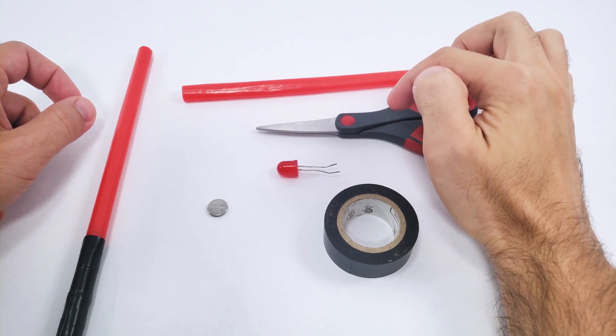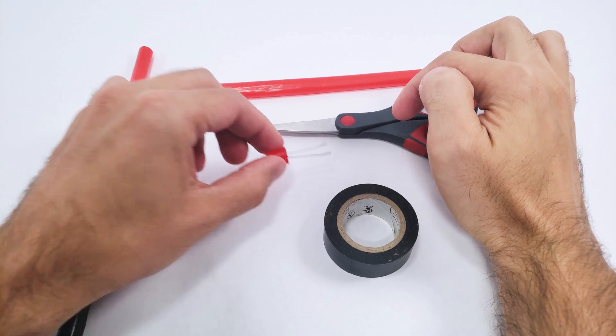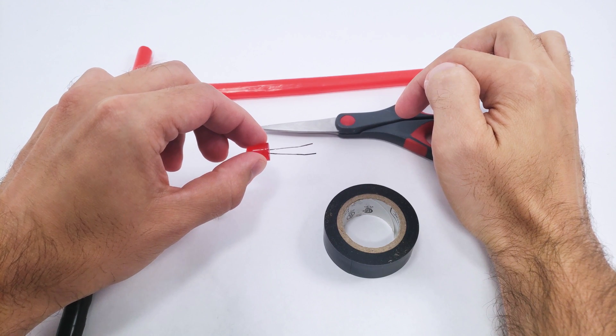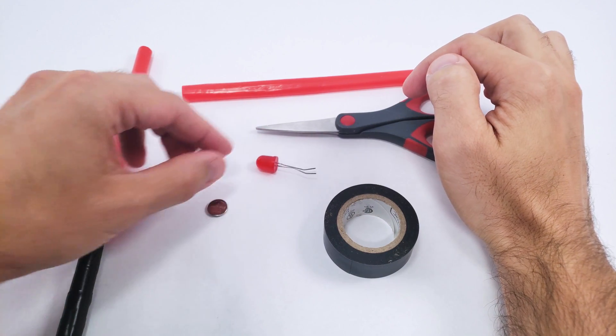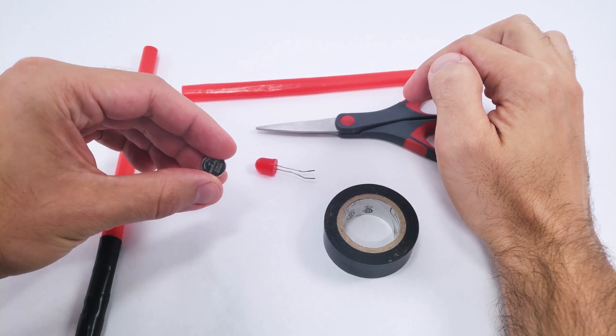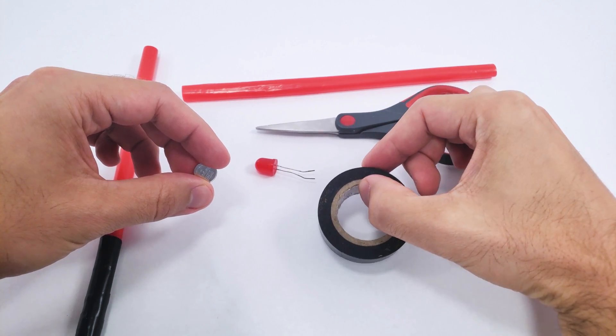You will need a milkshake straw, scissors, a 10 millimeter LED, which is larger than your normal 5 millimeter LEDs, a CR1220 coin cell battery, and electrical tape.